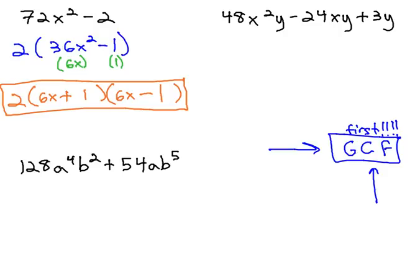Let's take a look at another problem. Here, we're taking 48x squared y minus 24xy plus 3y. Again, it's important we always do the greatest common factor first. Looking through this problem, we see the greatest common factor is 3y. When we factor out the 3y, we get 16x squared minus 8x plus 1.